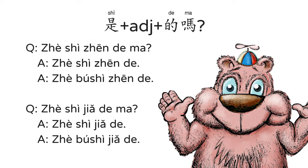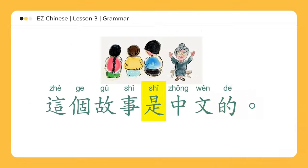Is this true? It is true. This is not true. Is this false? This is false. 这不是假的。 This is not false — it is true. This still follows the 是 plus noun or adjective plus 的 pattern.